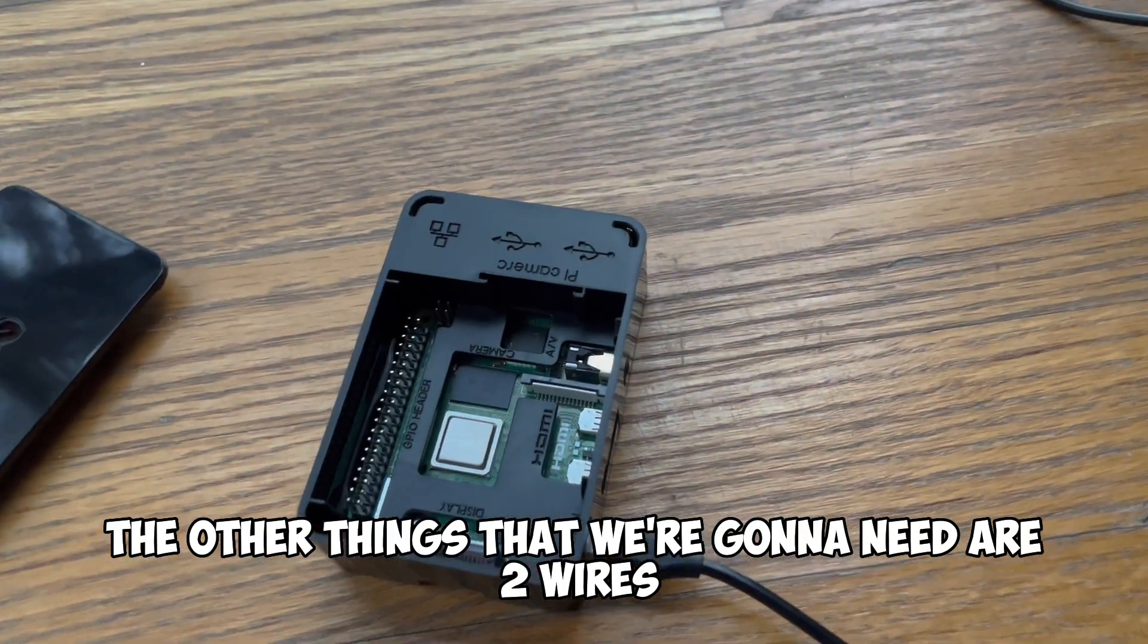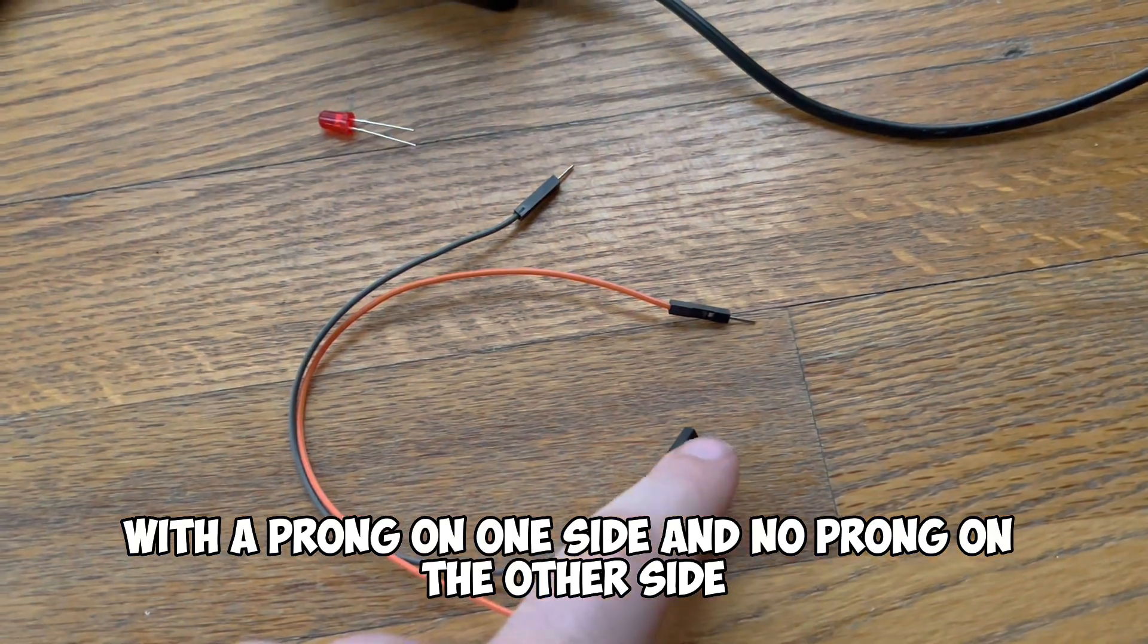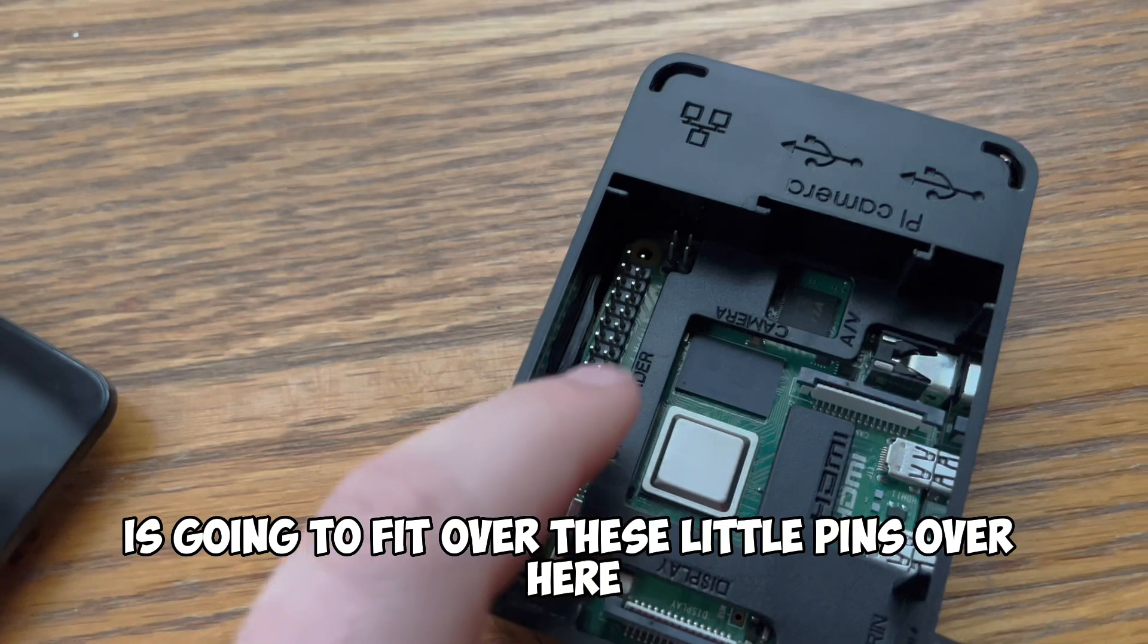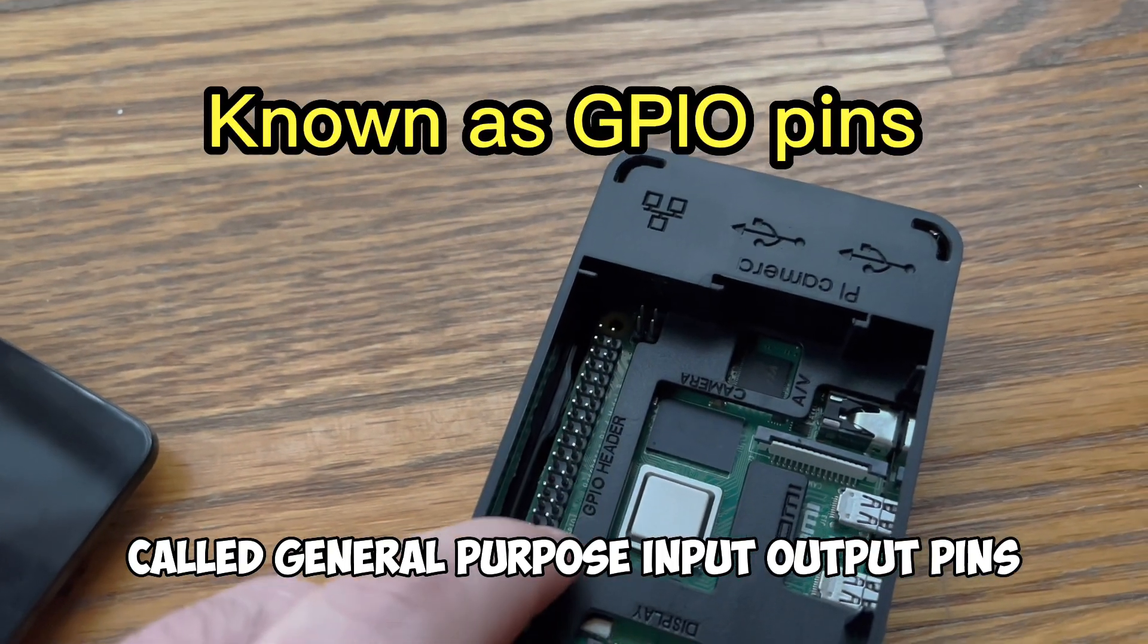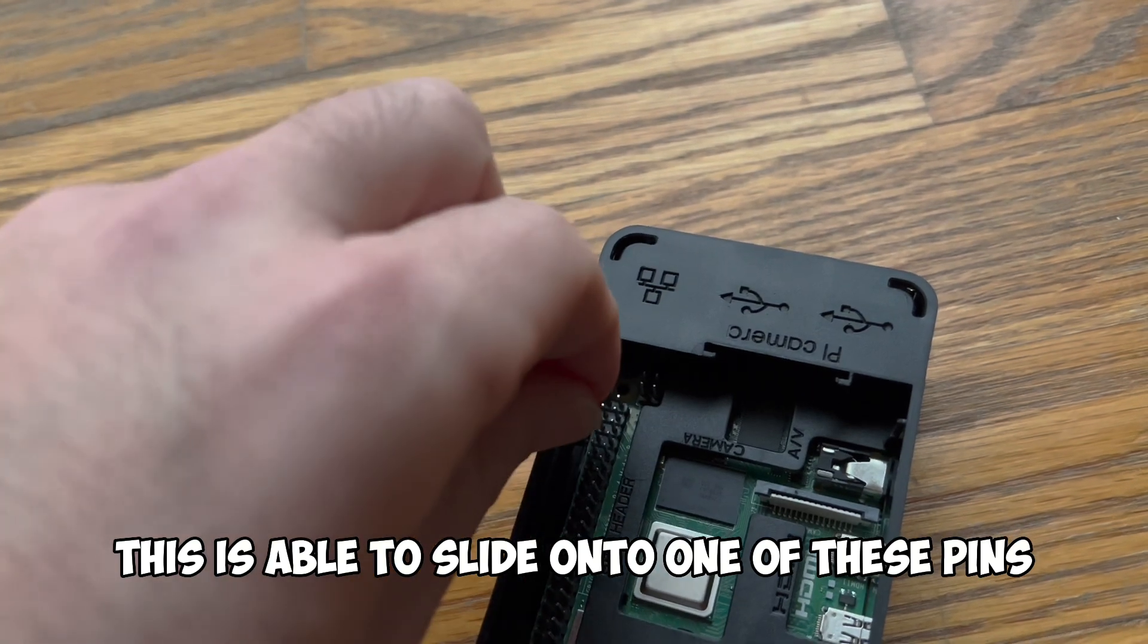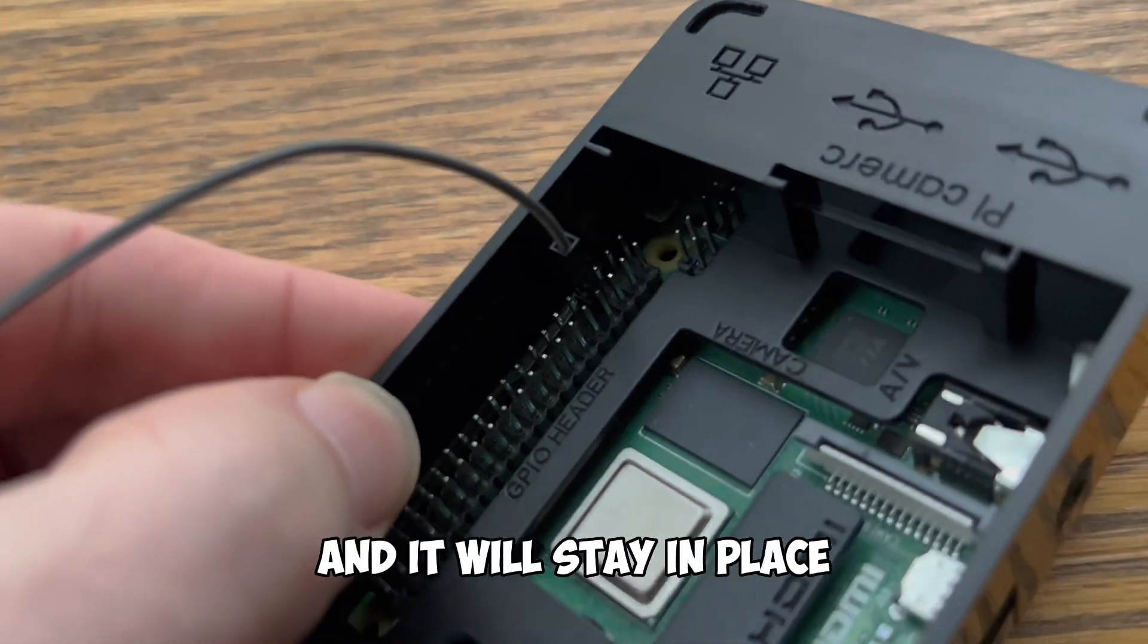The other things that we're going to need are two wires with a prong on one side and no prong on the other side. The side with no prong is going to fit over these little pins over here called general purpose input output pins. This is able to slide onto one of these pins and it will stay in place.